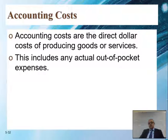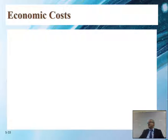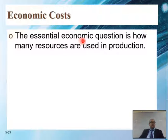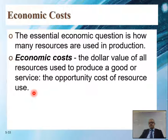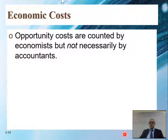Accounting includes only actual out-of-pocket expenses. If it's not out-of-pocket, it's not a cost — that's accounting. In economics, we have a different story. The essential economic question is: how many resources are used in production? Economic cost is the dollar value of all resources used to produce a good or service — the opportunity cost of resource use. It means not just money, but even time. Opportunity costs are counted by economists, but not necessarily by accountants.